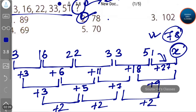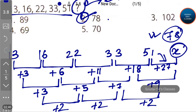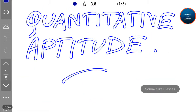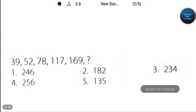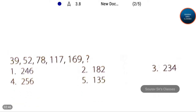Now let's go to our next question. Here again a series is given and the last term is also missing — let's denote it as x. The series is 39, 52, 78, 117, and 169.